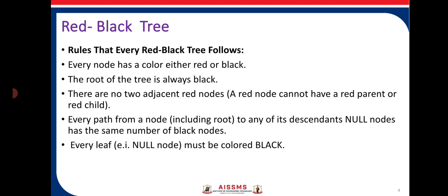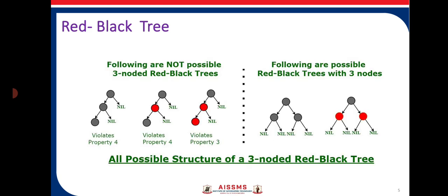The rules that every Red-Black Tree follows are: every node has a color, either red or black; the root of the tree is always black; there are no two adjacent red nodes — a red node cannot have a red parent or a red child; every path from a node to any descendant has the same number of black nodes; and every leaf node must be black.